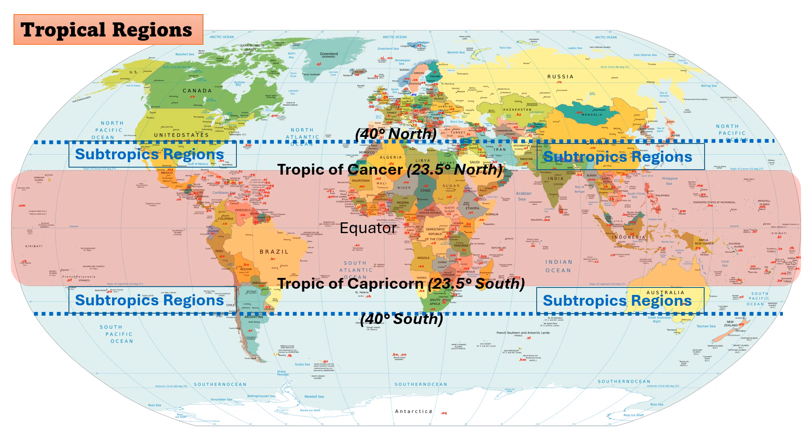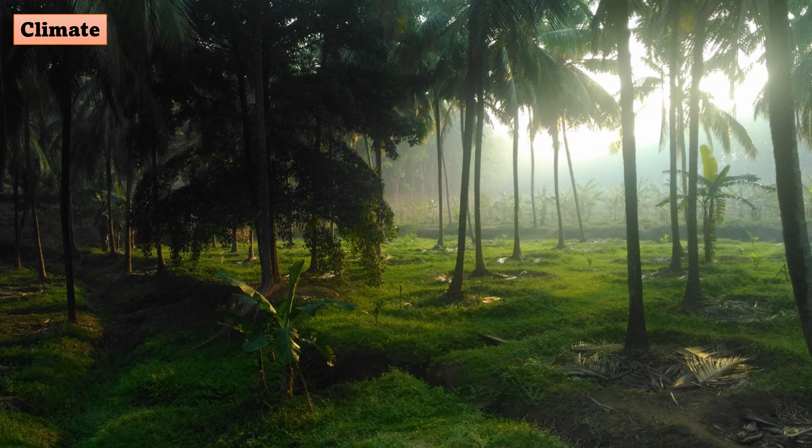These regions often experience a mix of tropical and temperate climates. Subtropical regions typically have hot summers and mild to warm winters, and can experience more temperature variation than tropical regions.